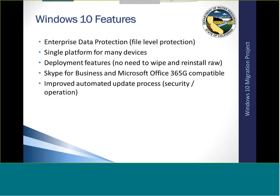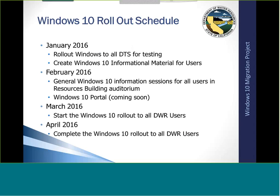Skype for Business and Microsoft Office 365 are things that Windows 10 is compatible with and was designed to work with. Those are coming in the future — we're starting our Microsoft Office 365G, which is for the government cloud, this summer, probably July 1. The improved automated update process for security and operations means you're going to have security and operational patches from Microsoft run automatically in the background, and the most you'll see is maybe a reboot here and there. More information will be available on our customer portal.